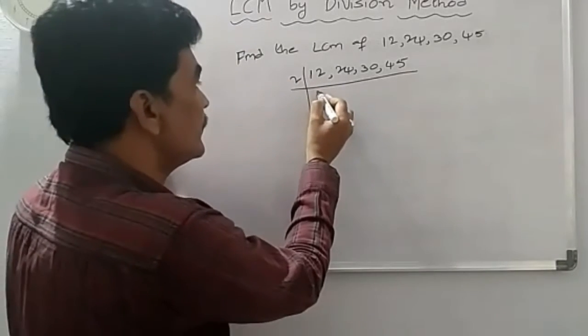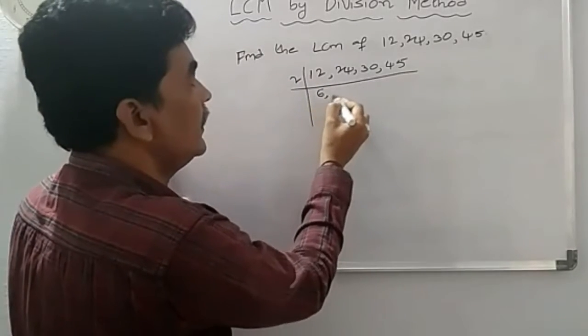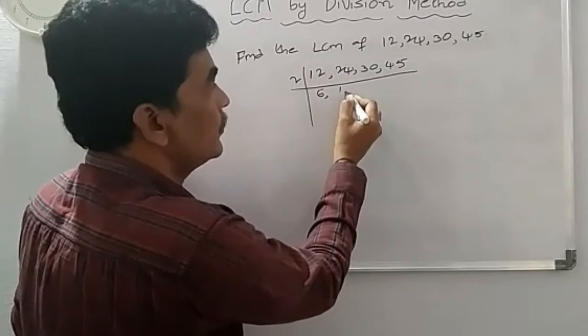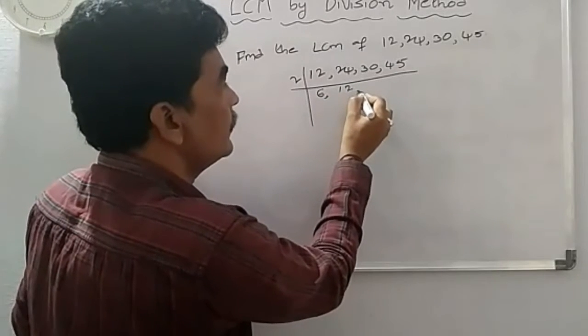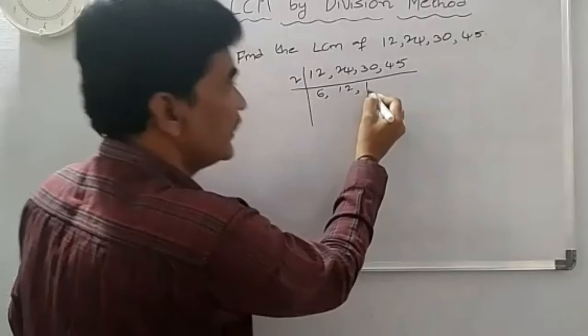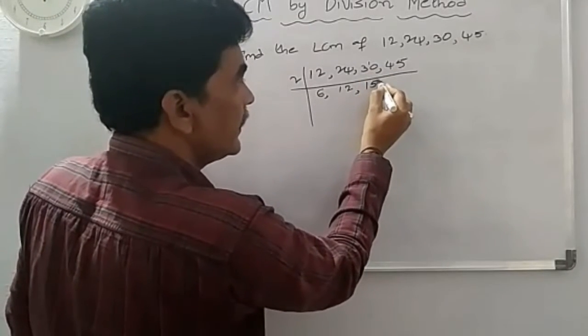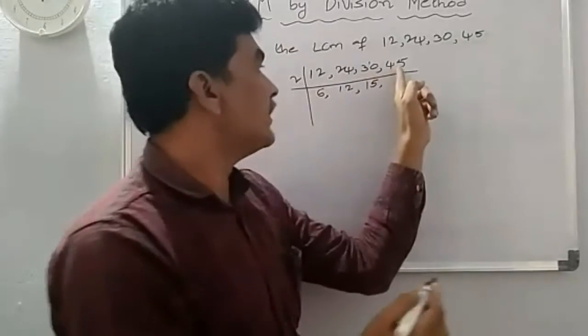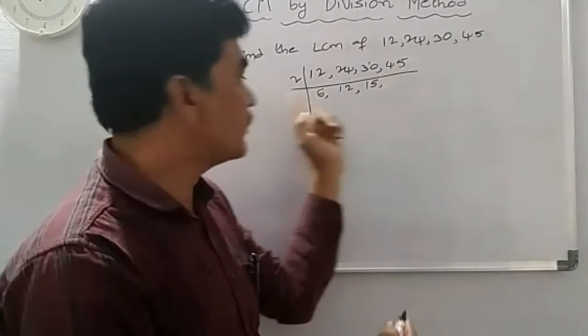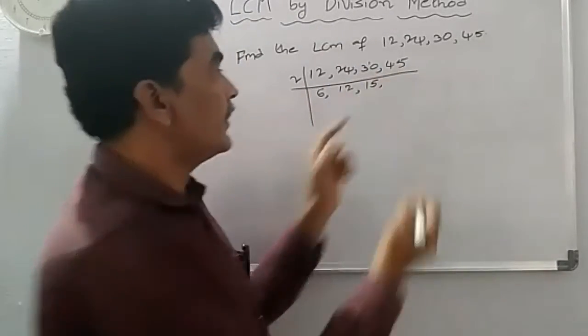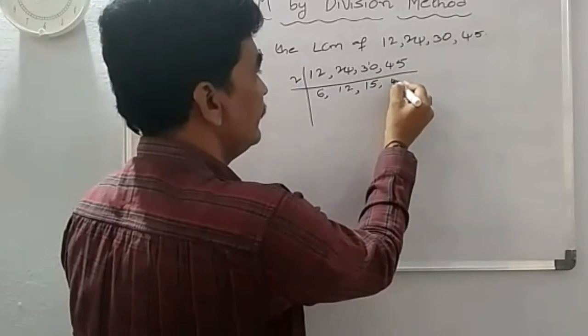Now, 2, 6 are 12, 2, 1's are 2, 2, 2's are 4, 2, 1's are 2, 1 remaining 10, 2, 5's are 10. 45 is not divisible by 2, so then write as this, 45.